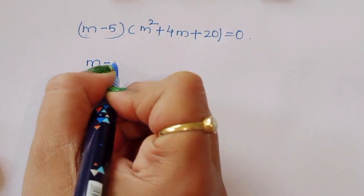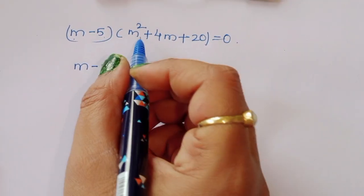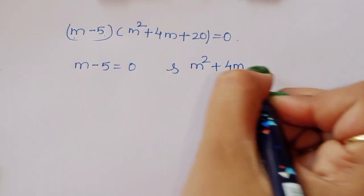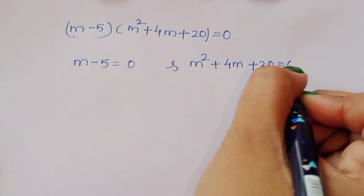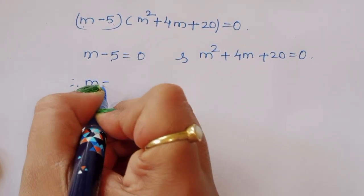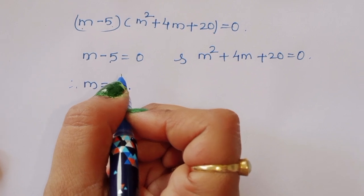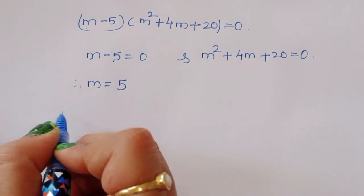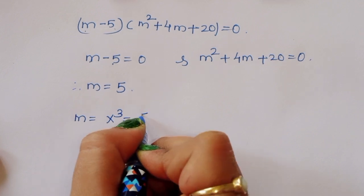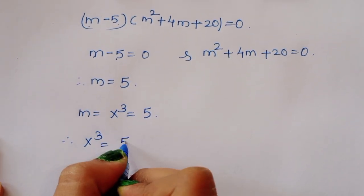We got two solutions here. First: m minus 5 equals 0, therefore m equals 5. Second: m squared plus 4m plus 20 equals 0. Since we assumed m equals x cubed, from the first solution m equals x cubed equals 5.